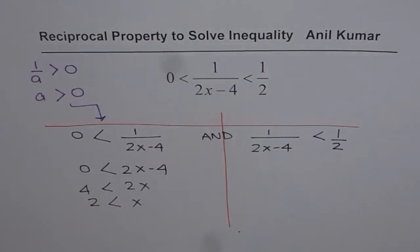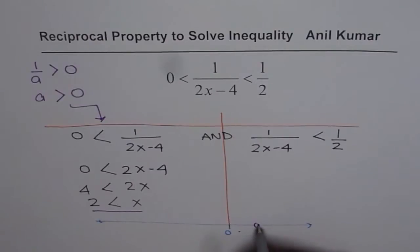What we see from here is that x is positive. On a number line, the solution x > 2 means that if we have 2 here, then x is on the right side.